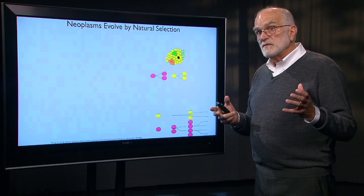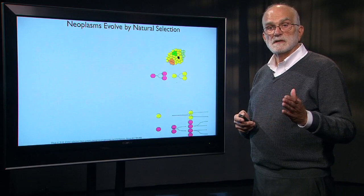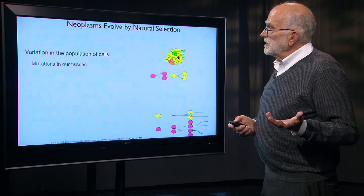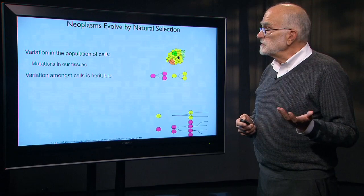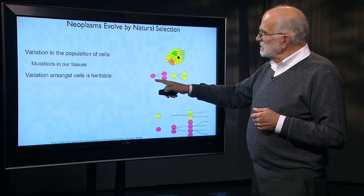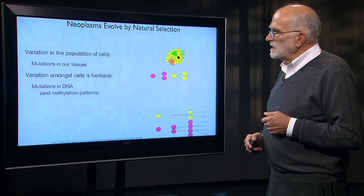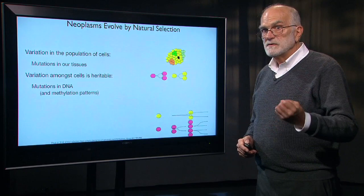Neoplasms are evolving by natural selection — this is before you really get a malignant cancer. There is a long period of evolution. There's variation within the population of cells: mutations are occurring in our tissues. That variation is heritable — a pink cell gives rise to pink cells and a yellow cell gives rise to yellow cells. The mutations are occurring both in the DNA and in methylation patterns and other epigenetic marks present in the cells.